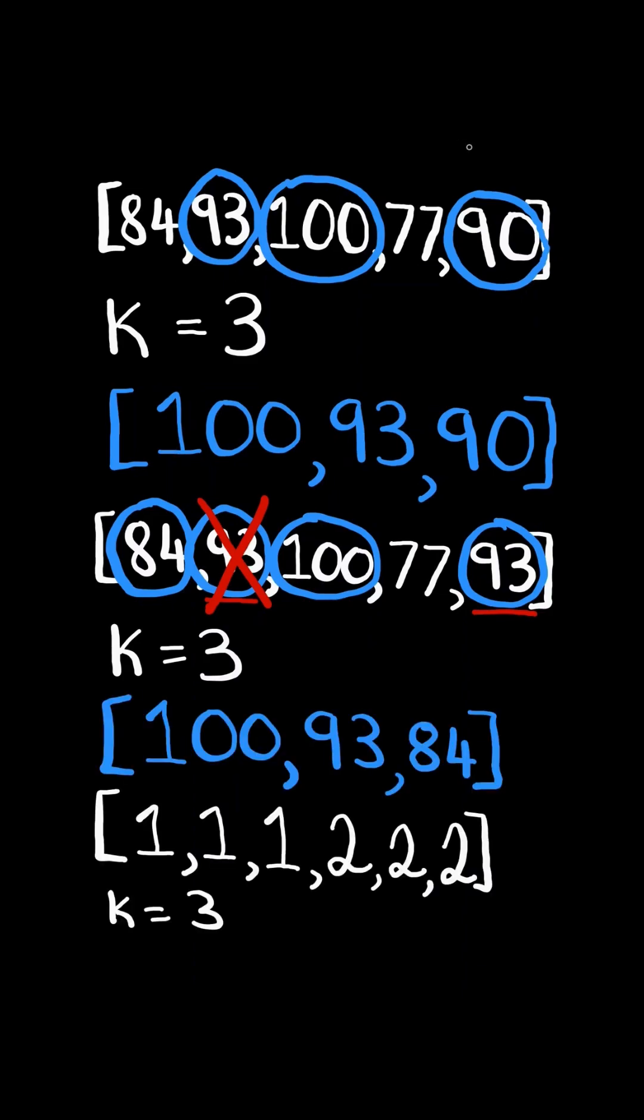And lastly, consider this example. There are only two distinct numbers, so we return them in descending order.